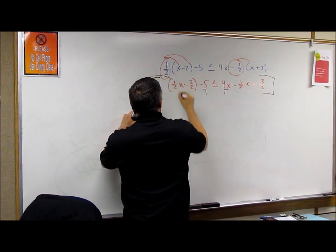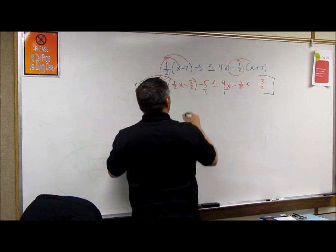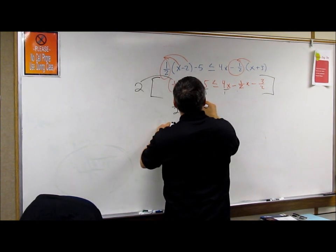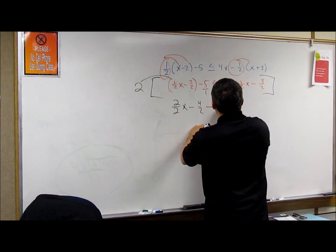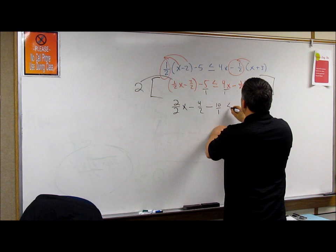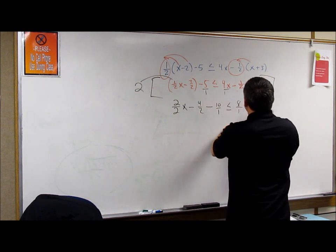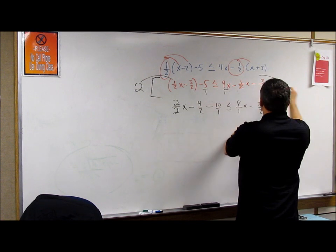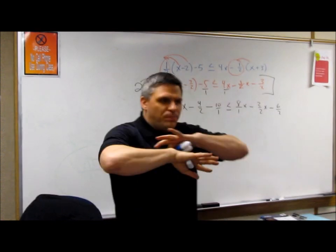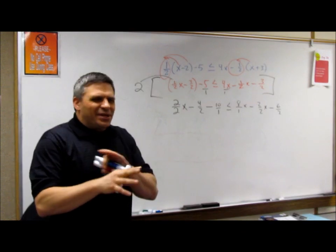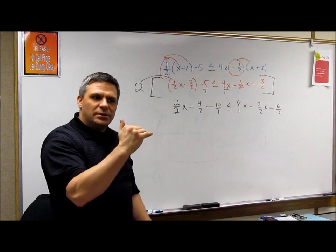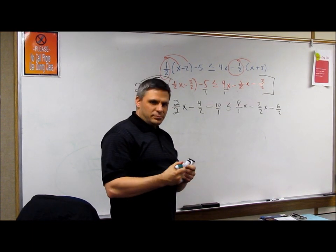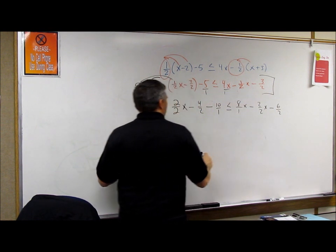Multiply everything on the block. So sometimes I just write it 2 over 2x minus 4 over 2 minus 10 over 1 is less than or equal to 8 over 1x and minus 2 over 2x minus 6 over 2. I didn't try to break it down while I'm doing it. Just do it. You can break it down later. If you try to break it down while you're doing it, mistakes happen. So just do it and then break it down.